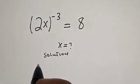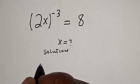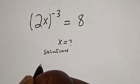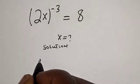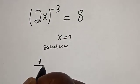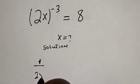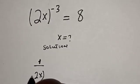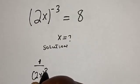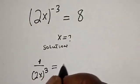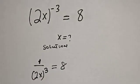2x raised to the power of minus 3 can be written as 1 over 2x raised to the power of 3, and it's equal to 8.